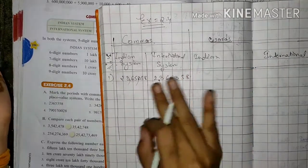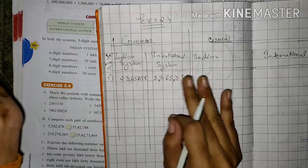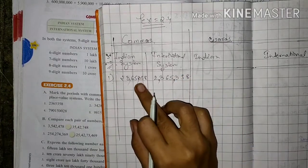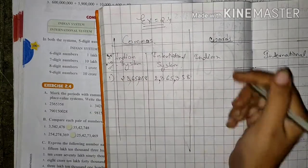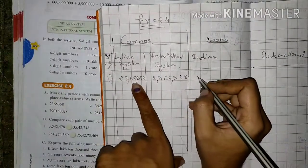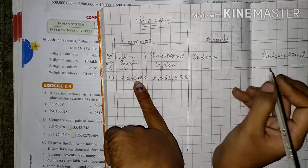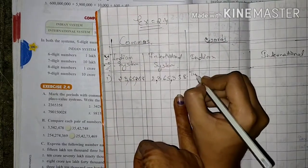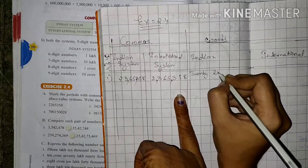Now read the number in the Indian system. It reads: twenty-three lakh, sixty-five thousand, three hundred and fifty-eight.